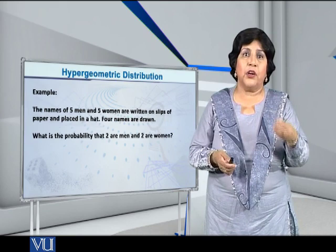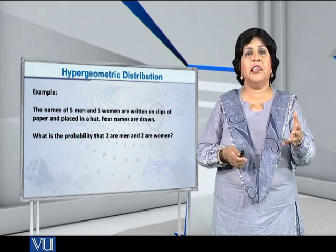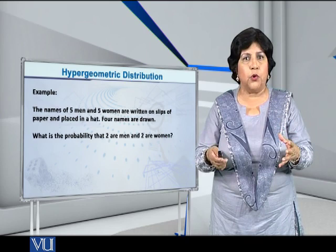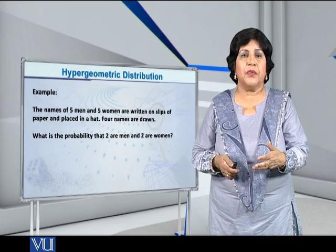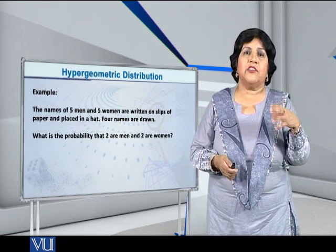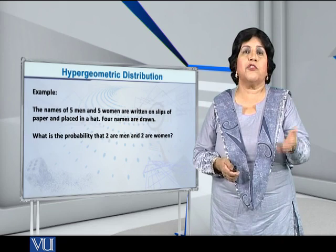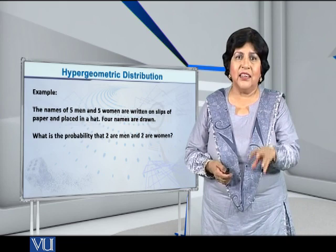Then, it is obvious that small n, the sample size is equal to four. Now, what is the probability that out of these four names that have been drawn, two are men and two are women?